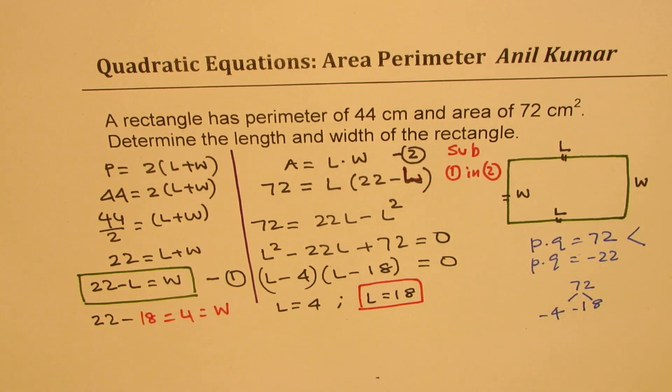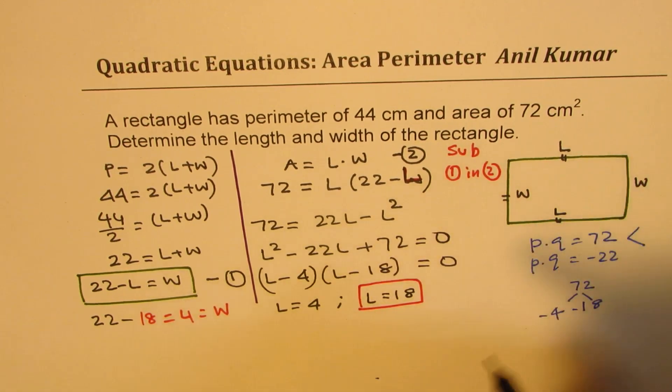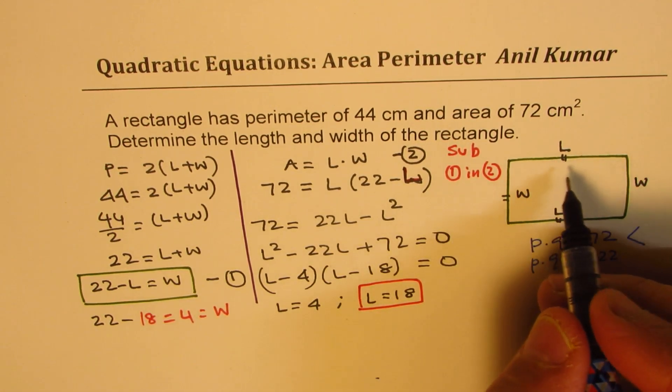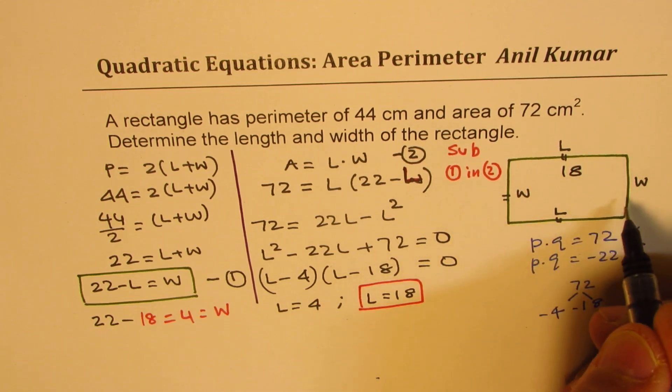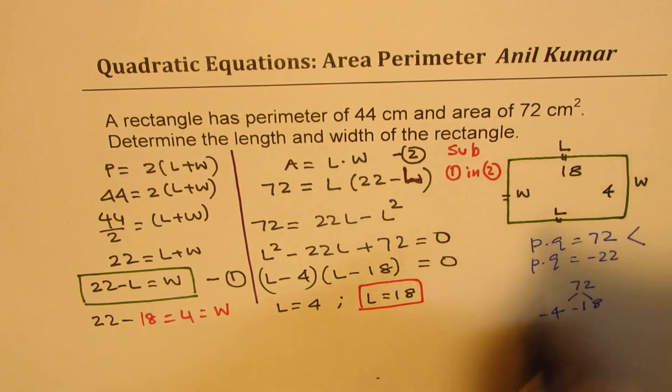So that could be one combination. It doesn't matter what you call which, but anyway, we know one of the sides is 18 for us and the other side is 4. So that gives you the solution.